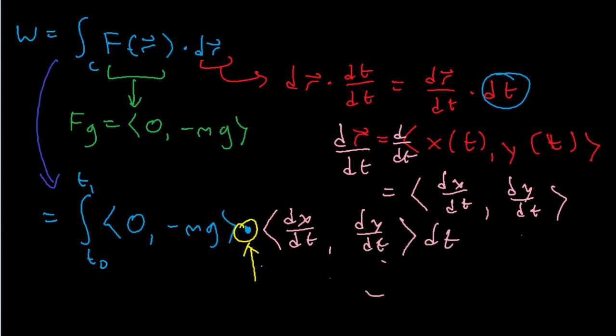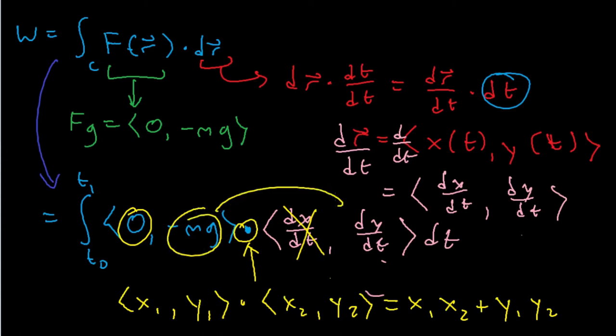You might recall from analysis that a dot product between two vectors is where you just multiply the x's and multiply the y's and you add them up. And conveniently, since the x component here is 0, we don't have to worry about dx dt. Instead, we only have to multiply these two.